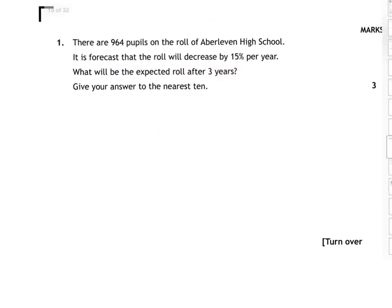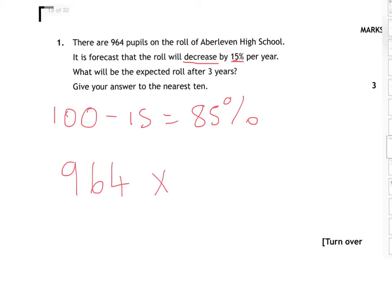This question is another depreciation one, but it doesn't actually say that. This is from last year's exam. It says there are 964 pupils on the roll of Aberleven High School, and it's forecast the roll will decrease by 15% each year. So when you see the increase or decrease and a percentage, that's when the bell should ring that this is about appreciation and depreciation. Every year it's going down by 15%, so 100% take away 15% means that every year there's only 85% of the pupils. The original amount is 964, times by 0.85, to the power of three years.